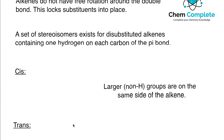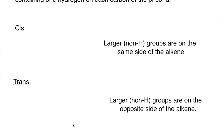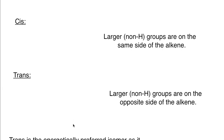Most people coming into organic chemistry, within the first couple of units, learn about cis and trans stereochemistry. Maybe you've heard about this with cyclic compounds where something is above or below the ring, in axial and equatorial positions. But this is also true for double bonds. When we take a look at a cis double bond, cis is going to refer to the larger non-hydrogen groups that are on the same side of the alkene.